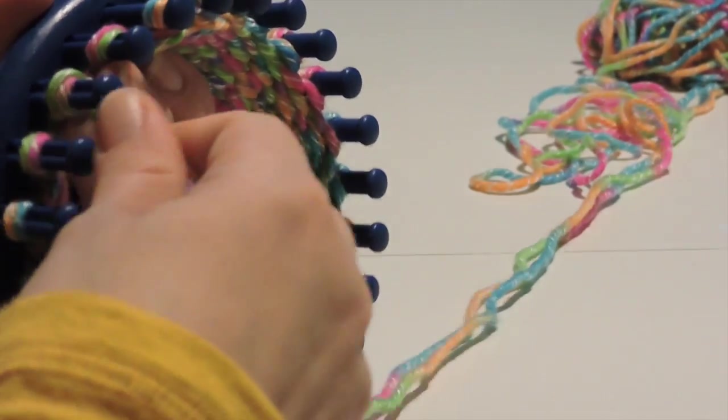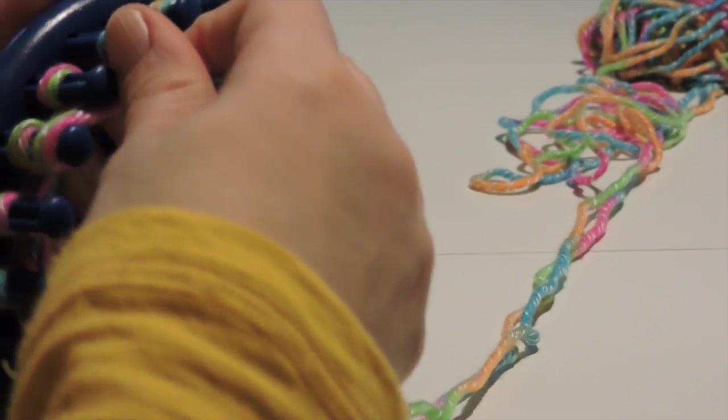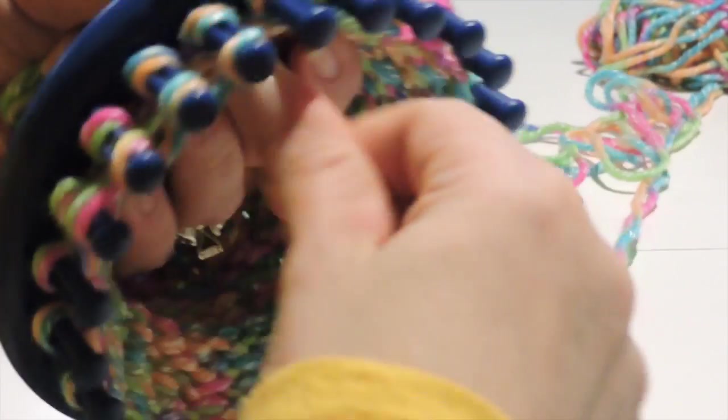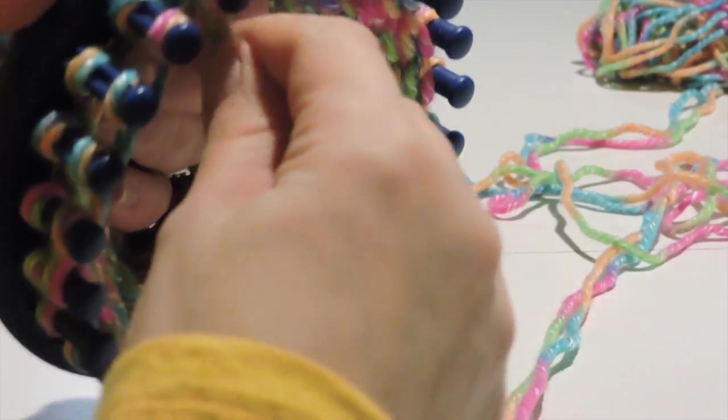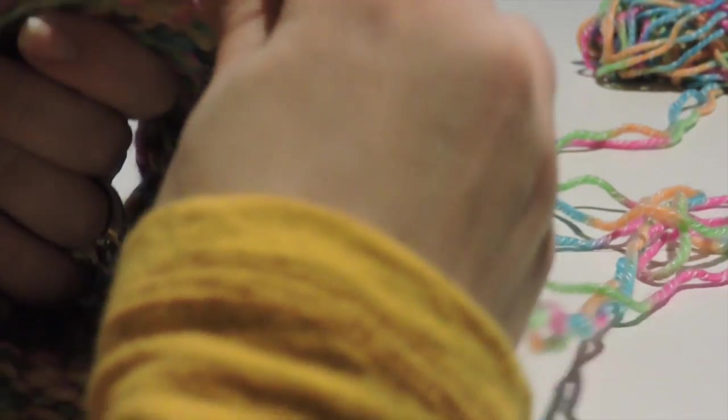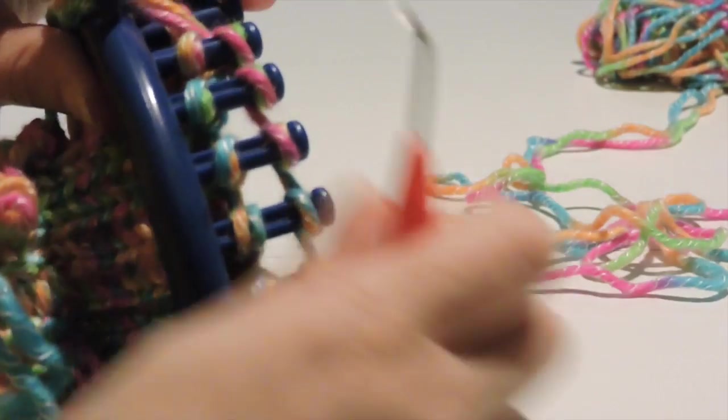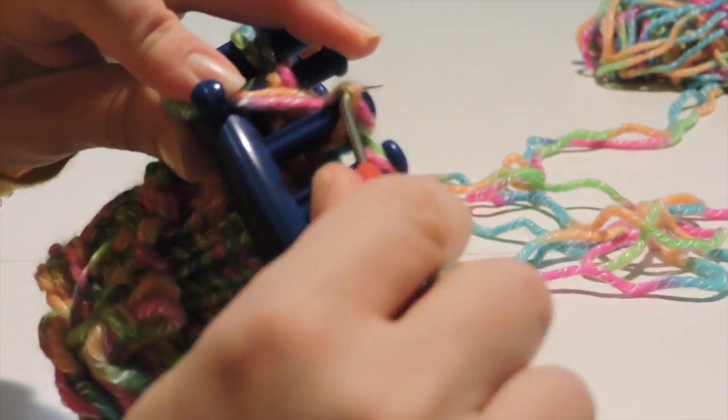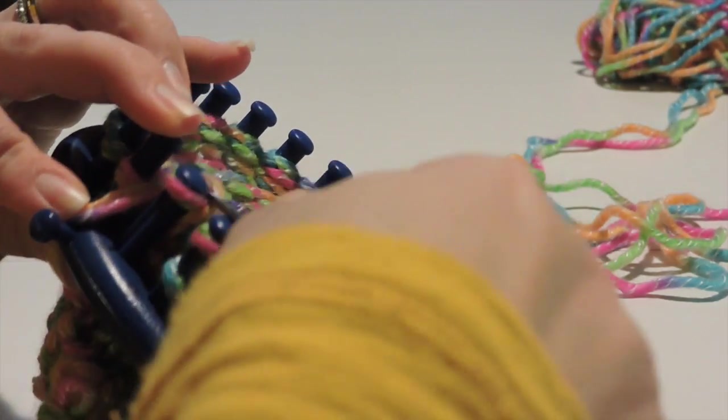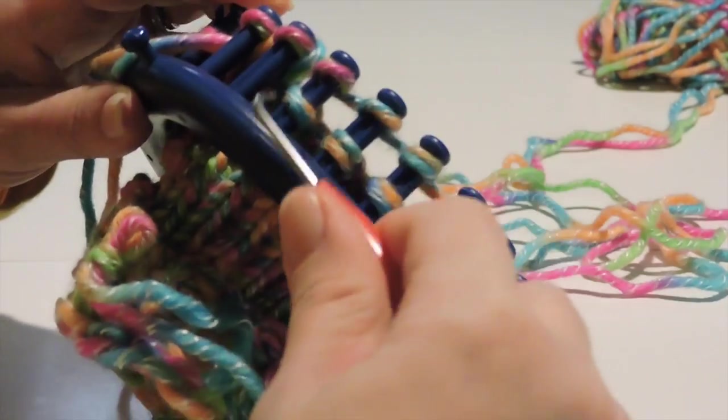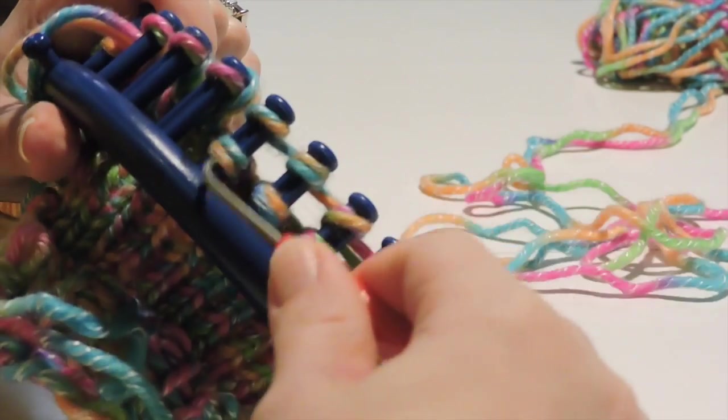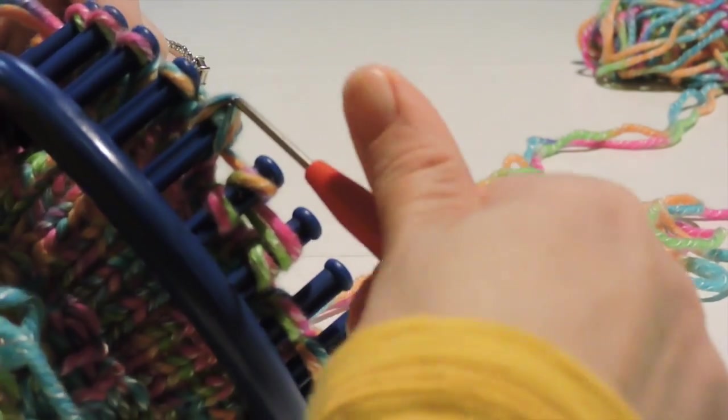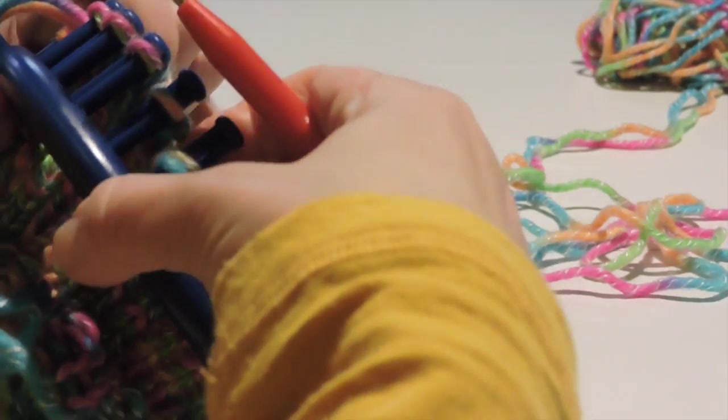Once you're done with that, go ahead and push the yarn down and we're going to wrap the other way. Secure your yarn and again we're going to take the bottom loop over the top. Bottom over the top, bottom over the top, and this is going to slowly form our thumb.